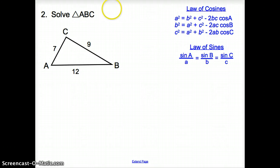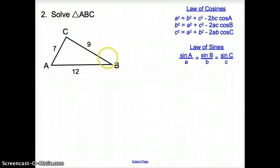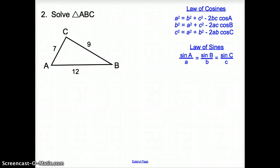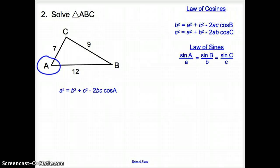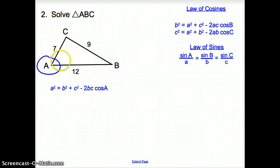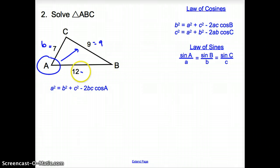So let's take a look at another one. Now with number two, we are given all three sides. So do we have to use the Law of Cosines or the Law of Sines? With the Law of Sines, we need an angle. We do not have one angle in this triangle, so we have to use the Law of Cosines. I can pick any formula I want — it just depends what angle I'm going to solve for. I'm going to pick angle A first. Please remember, ladies and gentlemen, that the side across from angle A is side A, this is B, and this is C.